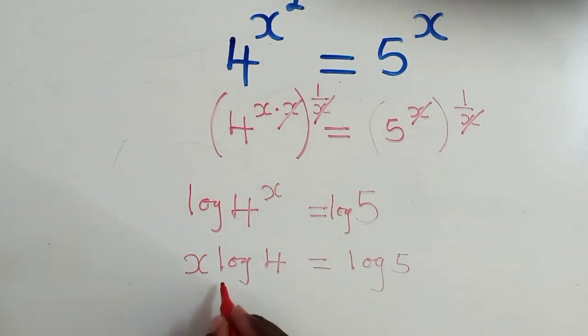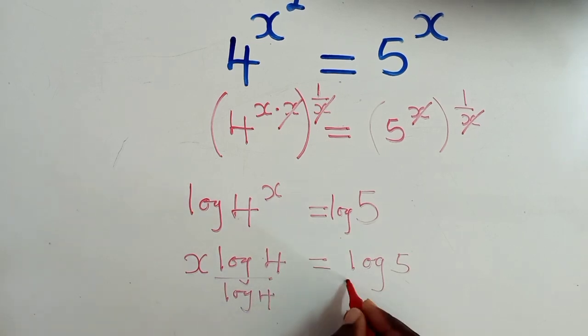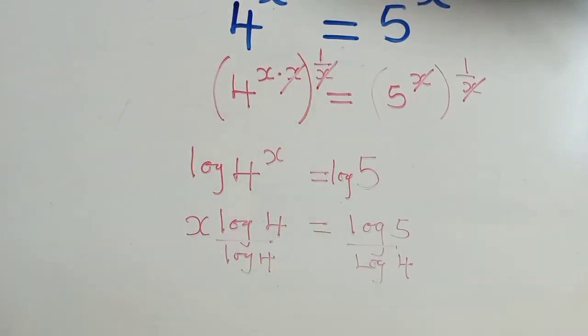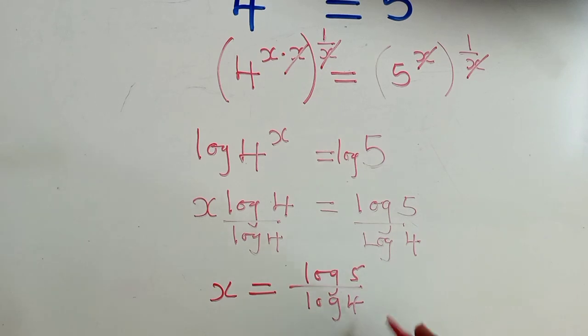So now to solve for x, we just need to divide by log 4, and this side also log 4. Okay, just like that. So if you can see nicely, our solution here will be x equal to log 5 over log 4. So this is our answer.